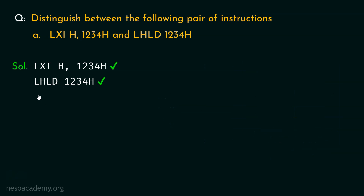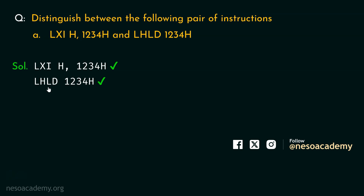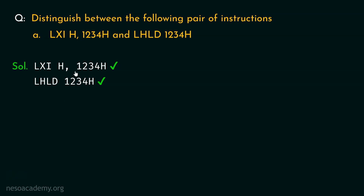To summarize the differences: LXI H,1234H loads the immediate value 1234H directly inside the HL register pair. On the other hand, LHLD 1234H loads some value into the HL register pair from the memory location 1234H. So 1234H in LXI is the data to be loaded, whereas in LHLD it is the memory location address.